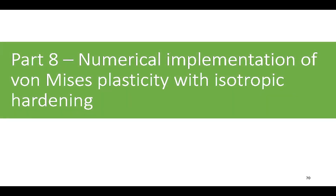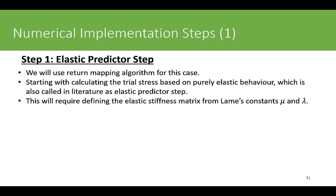We now move to Part 8: numerical implementation of von Mises plasticity with isotropic hardening. We will start with Step 1, which was the same as for the case when we had no hardening.